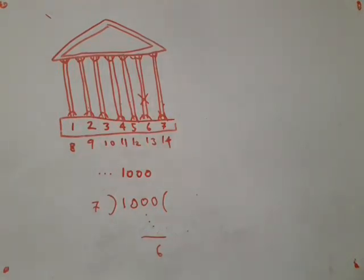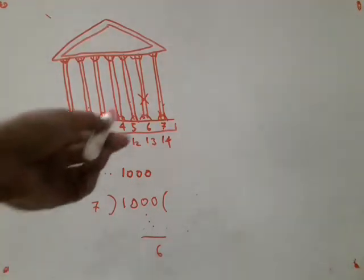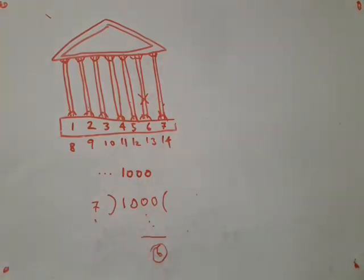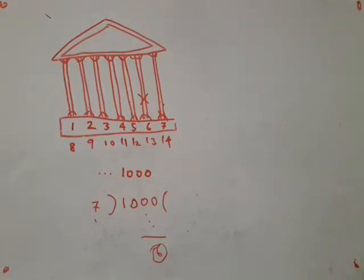Now carefully observe this particular setup. We had a concrete problem involving pillars and counting, but the clever servant converted it to an abstract problem of dividing 1,000 by 7 and taking the remainder. This is the essence of doing abstract algebra — you have a concrete problem, you see there is a mathematical structure behind it, and you utilize that to solve it. The beauty of abstract algebra comes mainly from the fact that underlying different, apparently unrelated problems, you have the same mathematical abstraction.